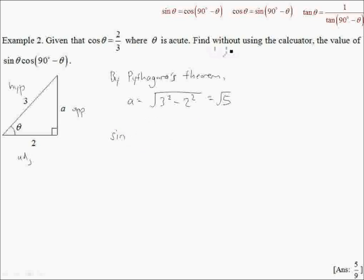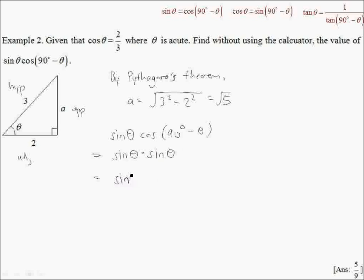The question says to find, without using a calculator, the value of sinθ multiplied by cos(90° - θ). The formula we will use is: cos(90° - θ) is equal to sinθ. Therefore, we can write this as sinθ multiplied by sinθ, which is simply sin²θ. Going back to our diagram, sinθ is opposite over hypotenuse, which is root 5 over 3. Squaring this, we get 5 over 9.